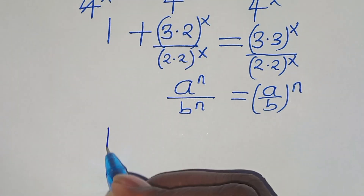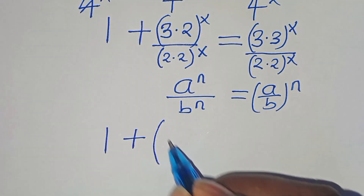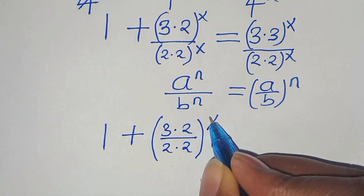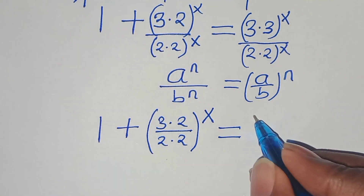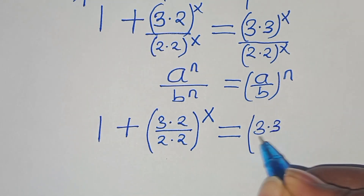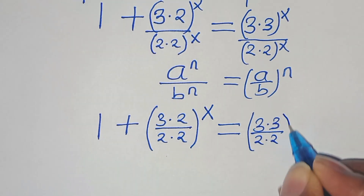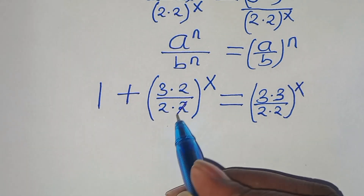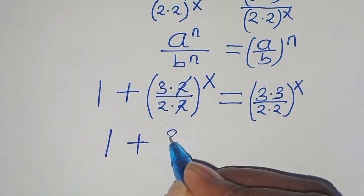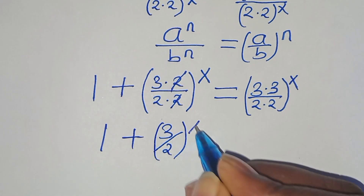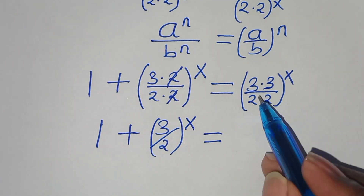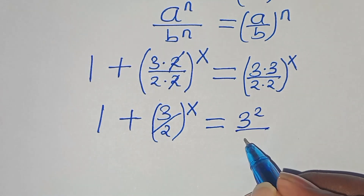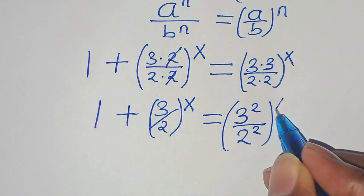Applying this exponent property, we have 1 plus (3 times 2) divided by (2 times 2), raised to the power of x. This is equal to (3 times 3) divided by (2 times 2), raised to the power of x. Simplifying: 2 and 2 cancel so we have 1 plus (3 over 2) raised to the power of x. This equals 3 squared divided by 2 squared, raised to the power of x.